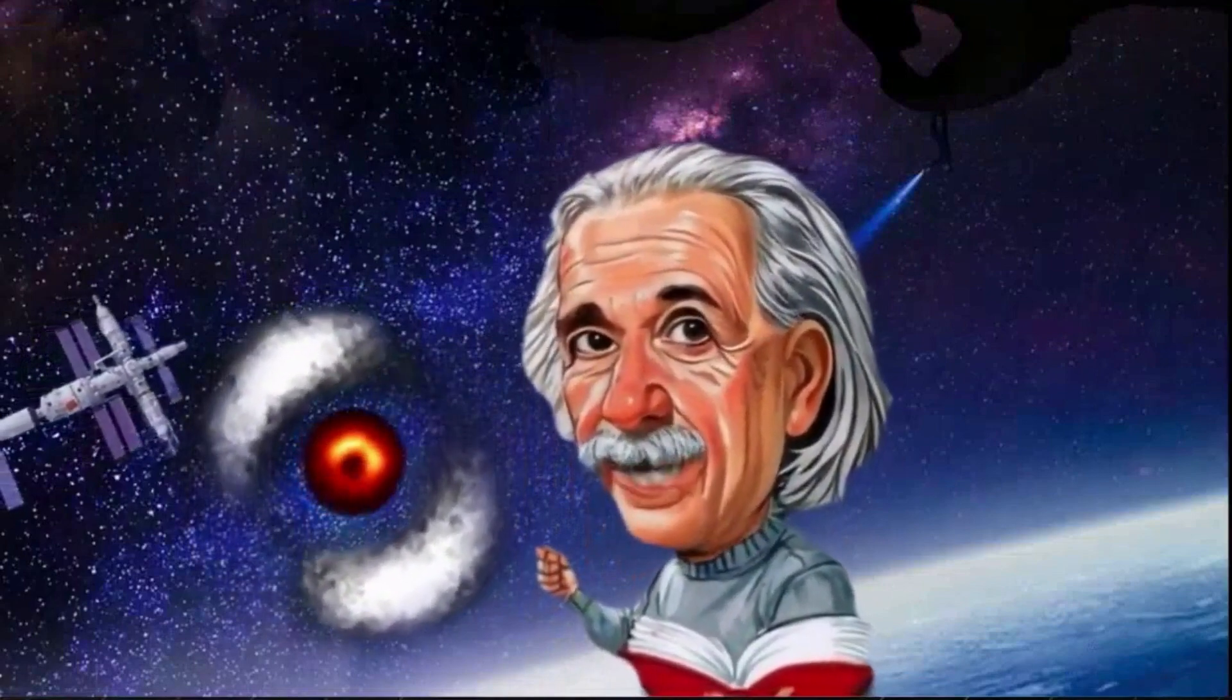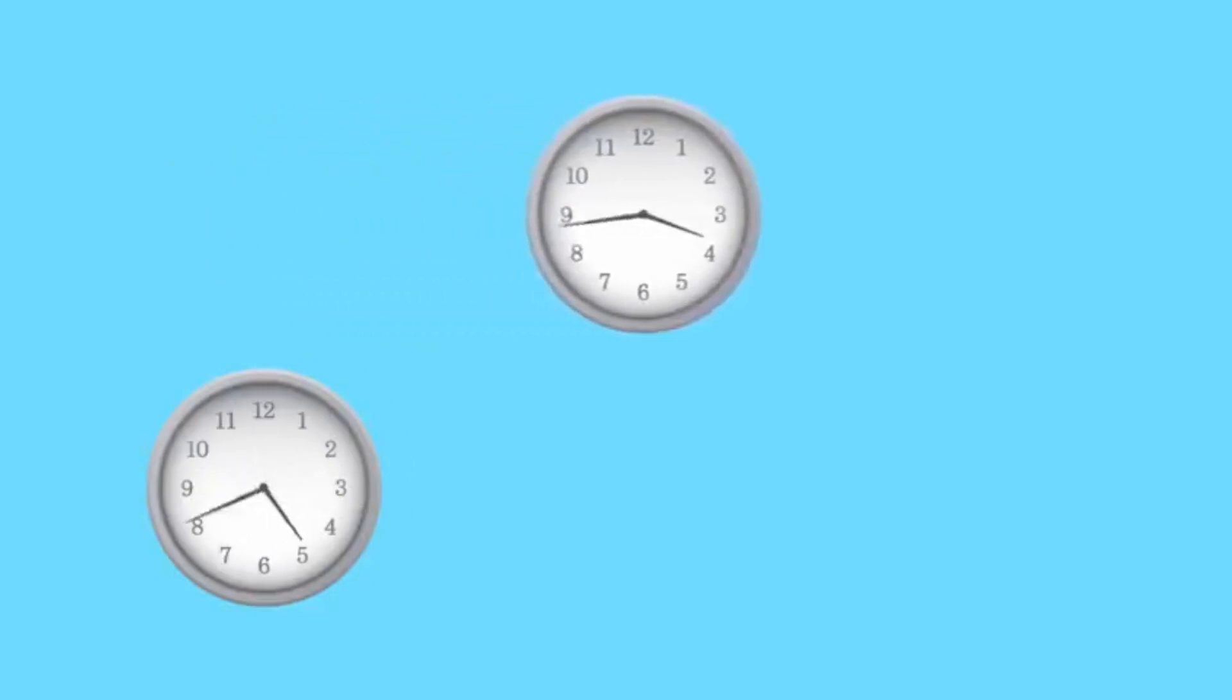According to Albert Einstein's special theory of relativity, as objects approach the speed of light, time slows down and distances contract. For a photon traveling at the speed of light, its journey appears instantaneous, as if it exists everywhere along its paths simultaneously.